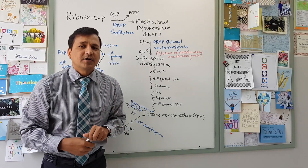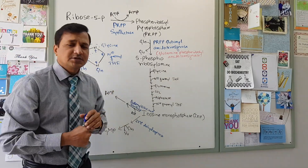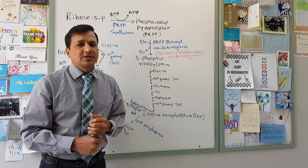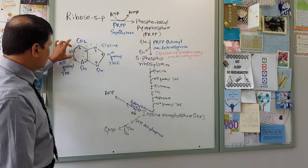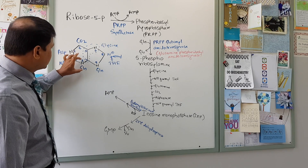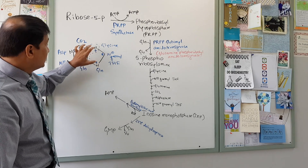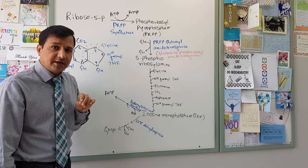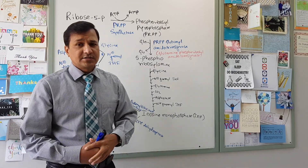These are the atoms coming from different metabolic intermediates. It is one of the important concepts in biochemistry that you need to know the donors of all the atoms present in the purine ring. Just to recap: nitrogen 1 from aspartate, carbon 2 from N10-formyl-tetrahydrofolate, nitrogen 3 from glutamine, C4, C5, and N7 from glycine, C6 from carbon dioxide, C8 from N10-formyl-tetrahydrofolate, and N9 from glutamine. Now let us see how this ring is synthesized.